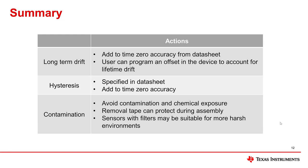Kapton tape can be used to prevent contamination of an open cavity sensor and should be placed over the sensor opening during the assembly process. This tape will need to be removed before operation. A sensor that has a permanent filter installed can be a good option for applications that require more robustness during device operation.